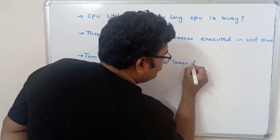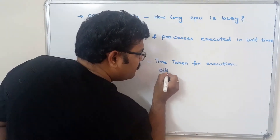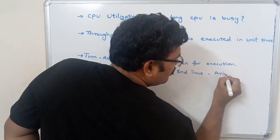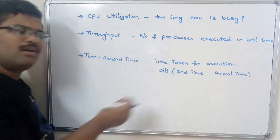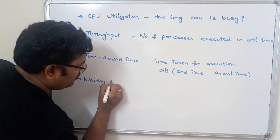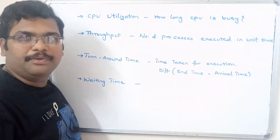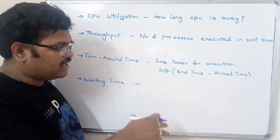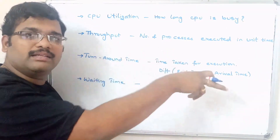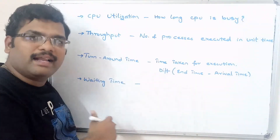Turnaround time is the time taken for execution — the difference of end time minus arrival time, or beginning time. The next criterion is waiting time: how much time the process waits to get the CPU. When one process is going on execution, the second process should wait until the executing process completes, so waiting time is how much time the process waits for allocation of the CPU.